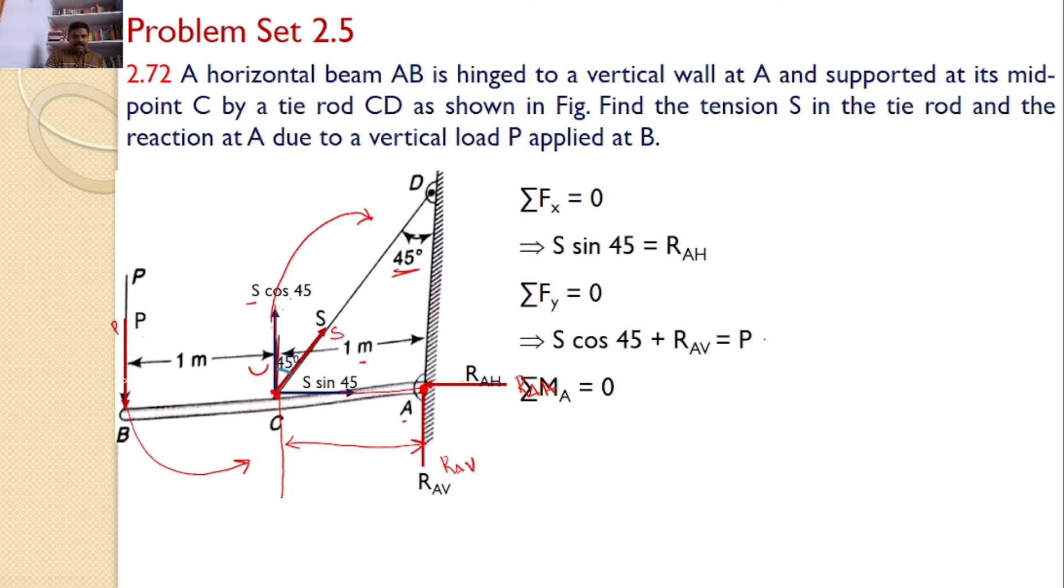Similarly, the line of action for P is this one, and the perpendicular distance is 2 meters. Hence, if you take moments about point A, P times 2 counterclockwise introduces positive moment, and S cos 45 introduces negative moment. So P times 2 minus S cos 45 times 1 equals 0.